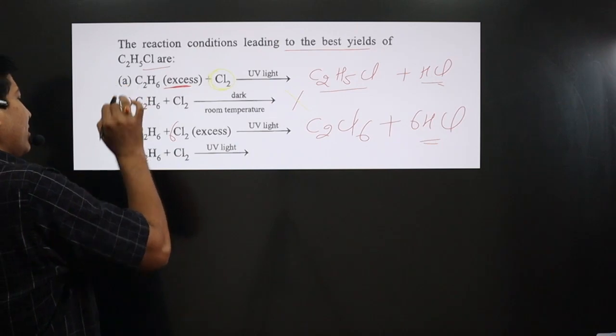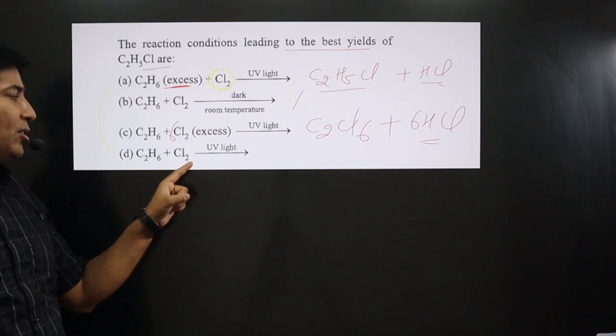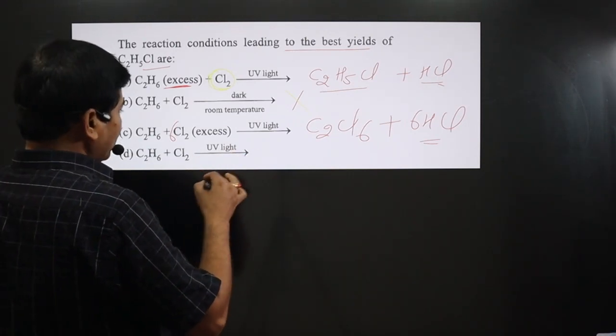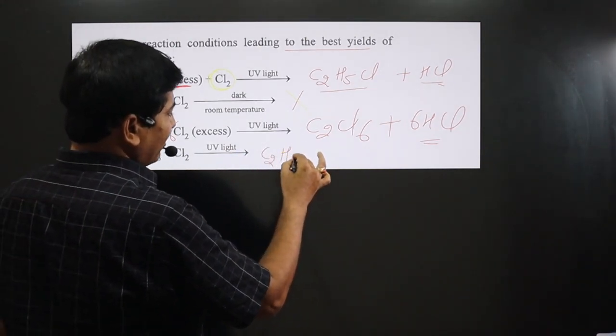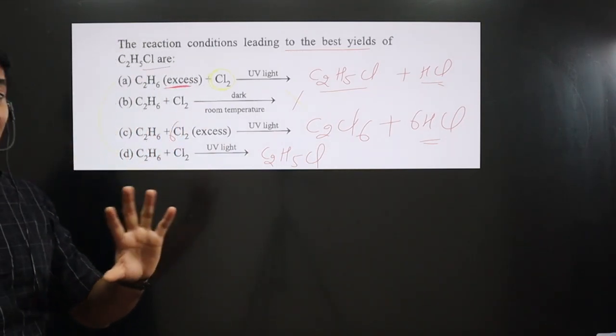This is quite confusing. We have option A and as well as D. In option D, C2H6 and Cl2 with UV light is there. The reaction will take place smoothly. Then, mono-halogenated product, we are supposed to get C2H5Cl.